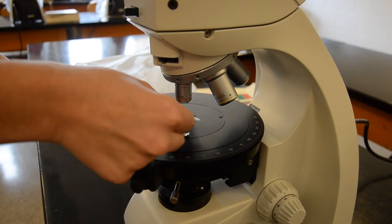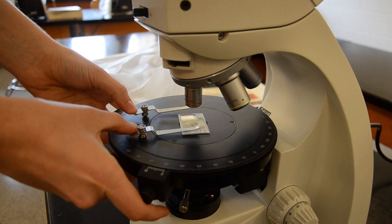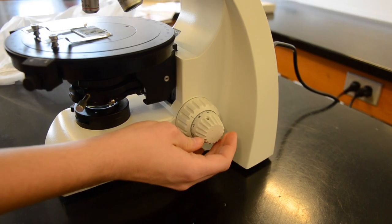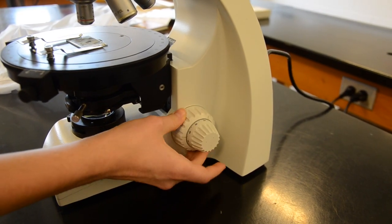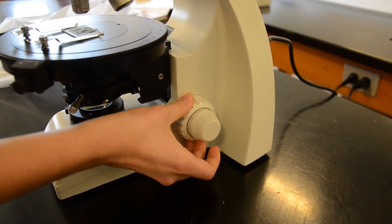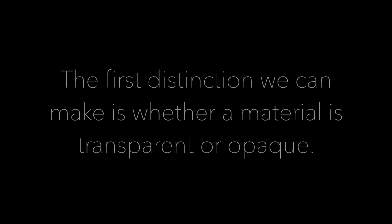To get started, I set up a slide on the stage of my microscope, then I focus. Now I can begin to make observations in polarized light. The first distinction we can make is whether a material is transparent or opaque.